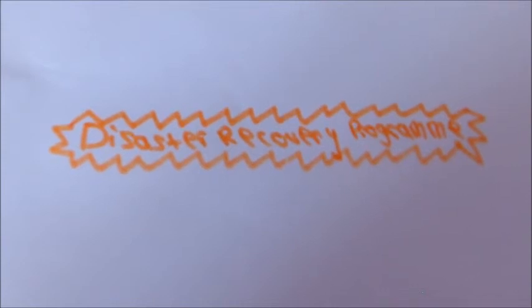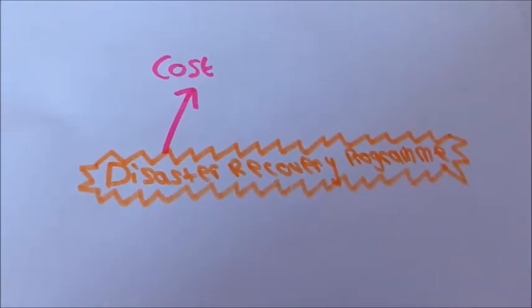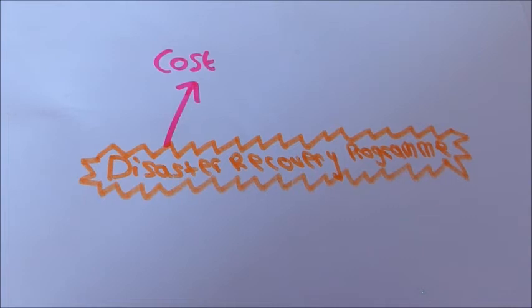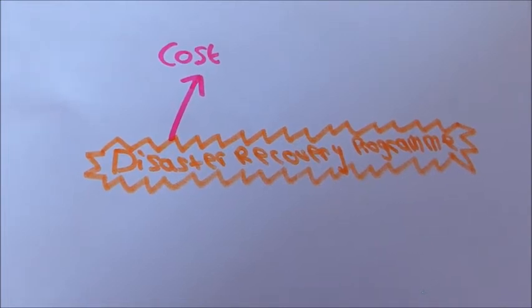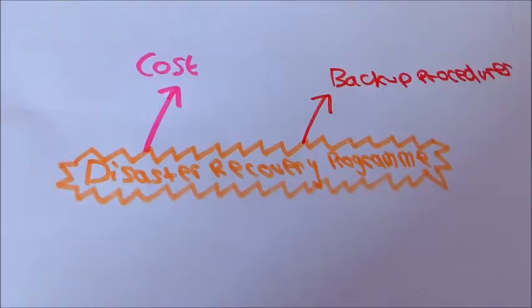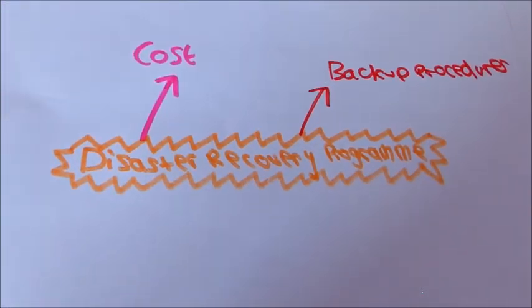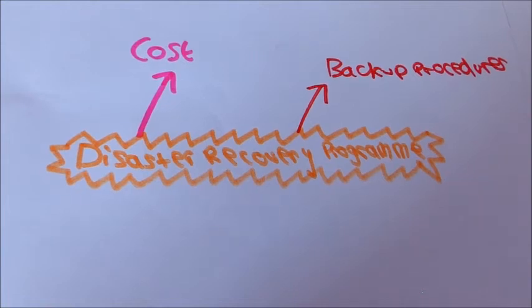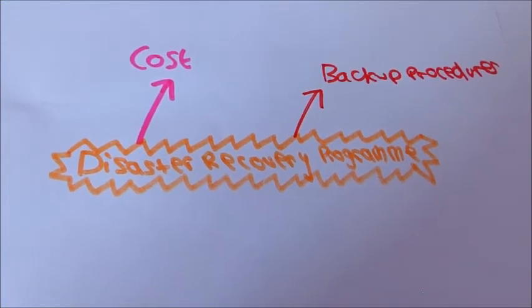Some of the factors involved in this are: The cost. The organisation needs to set up a budget for the disaster recovery programme and consider the hardware and software costs. The backup procedures. The organisation needs to decide on a backup policy in order to secure data.